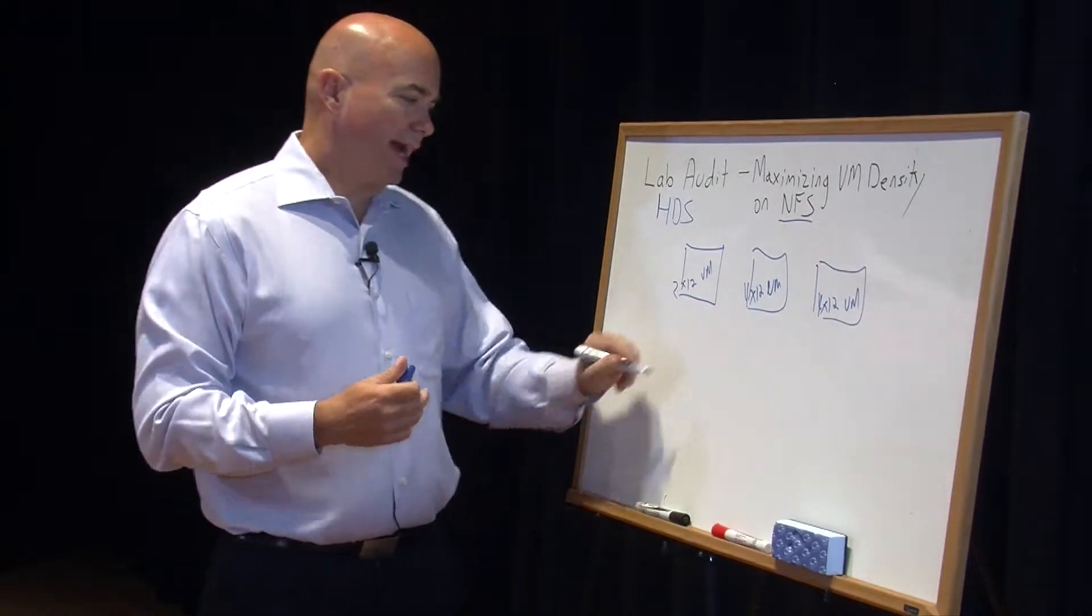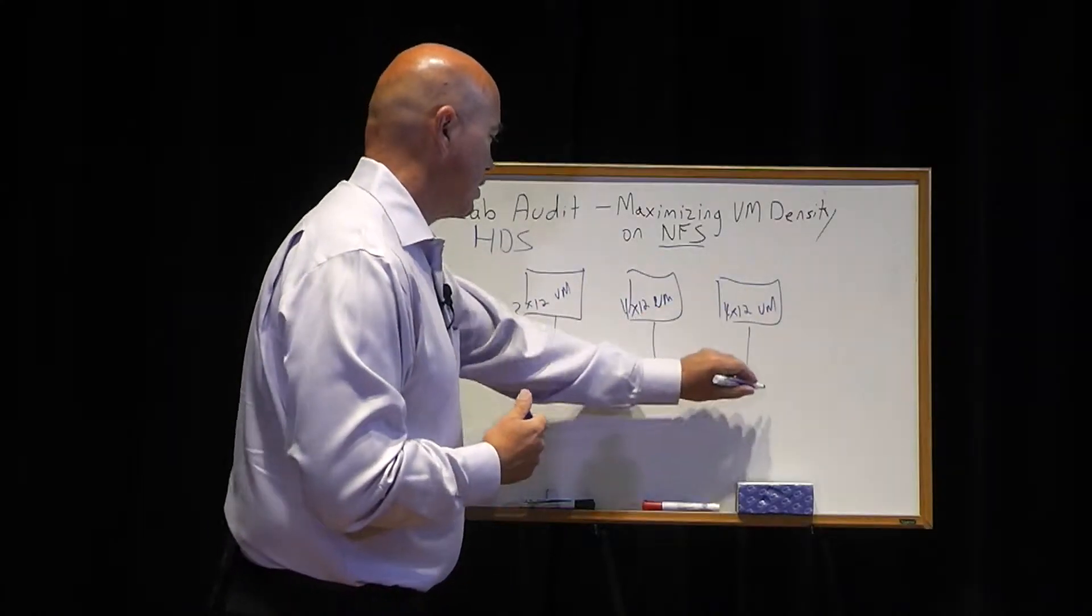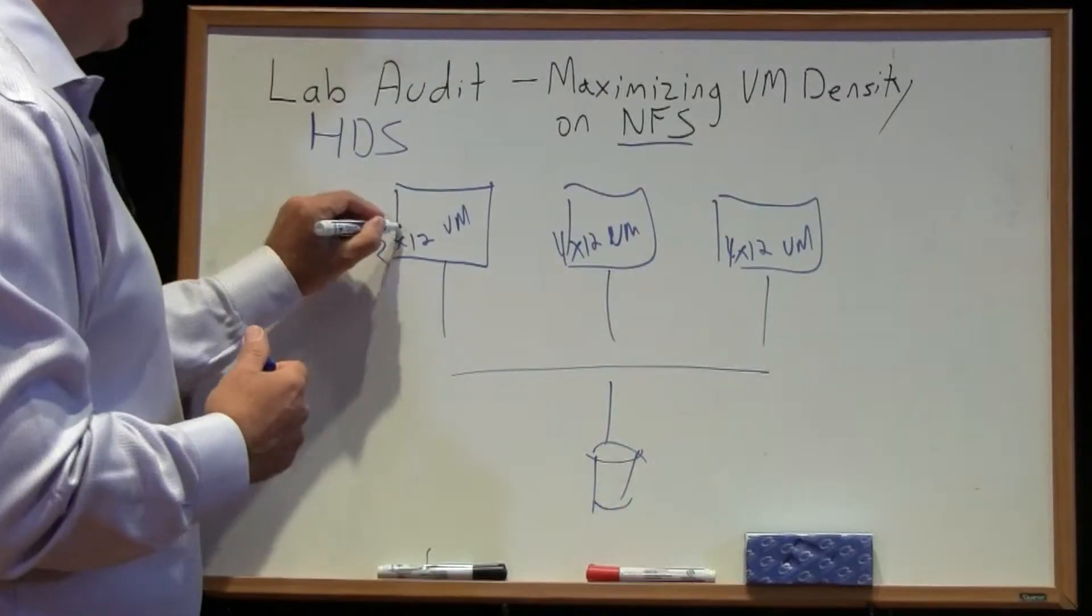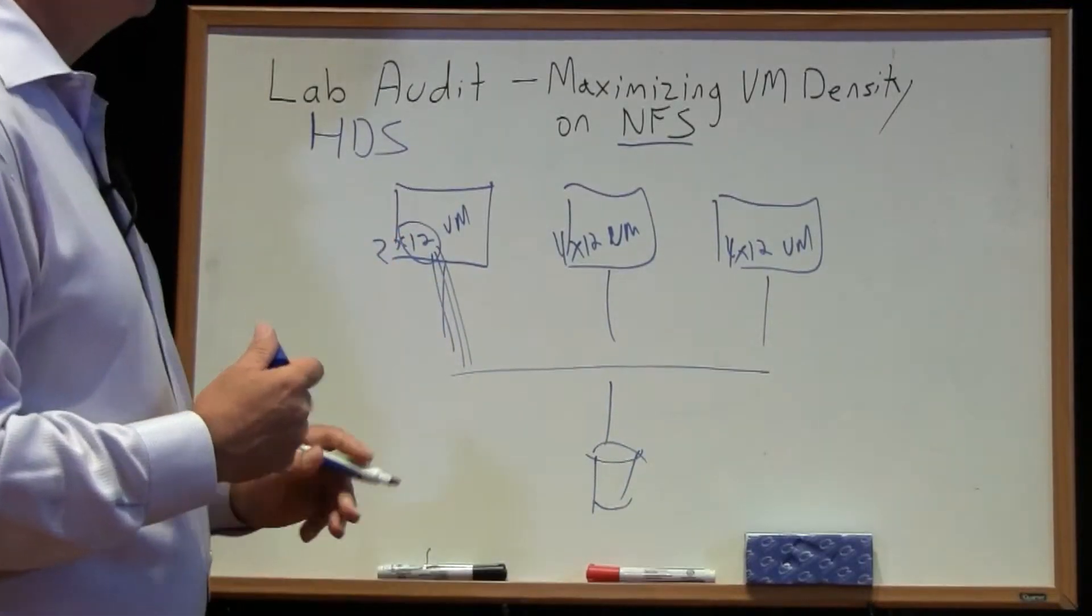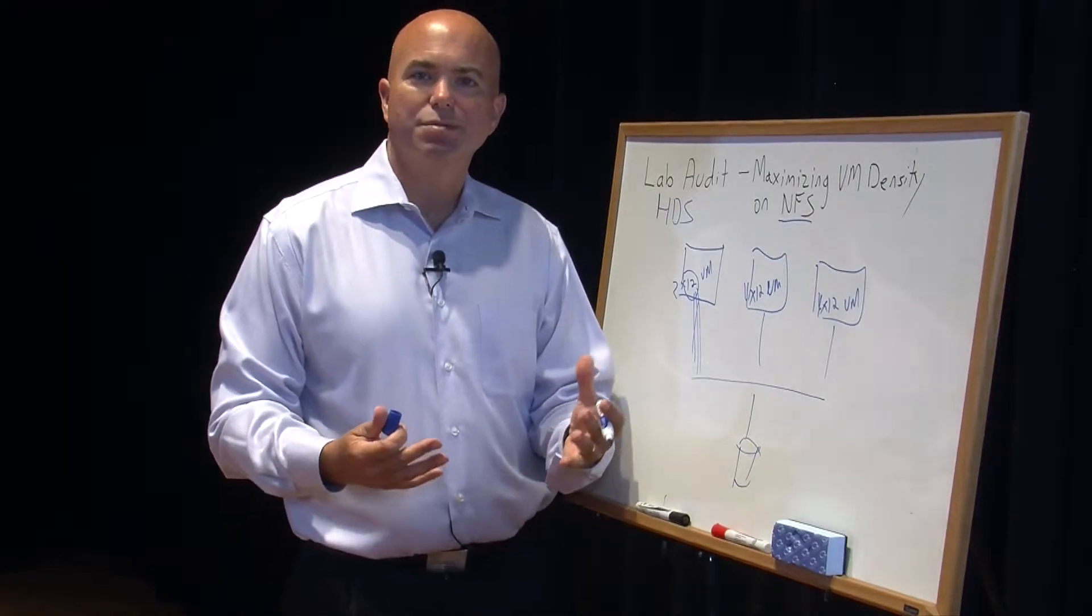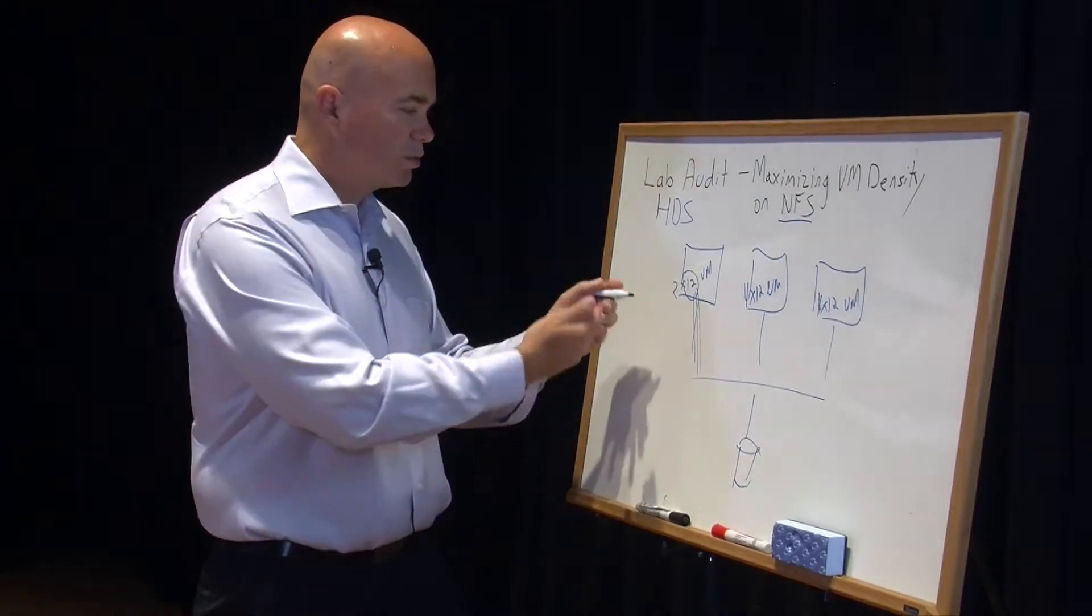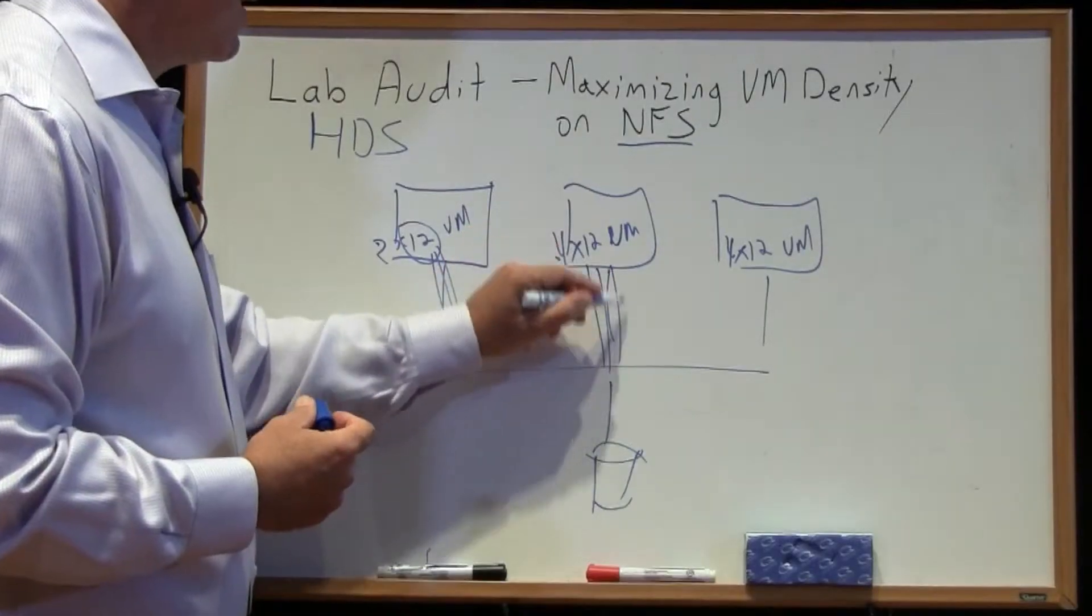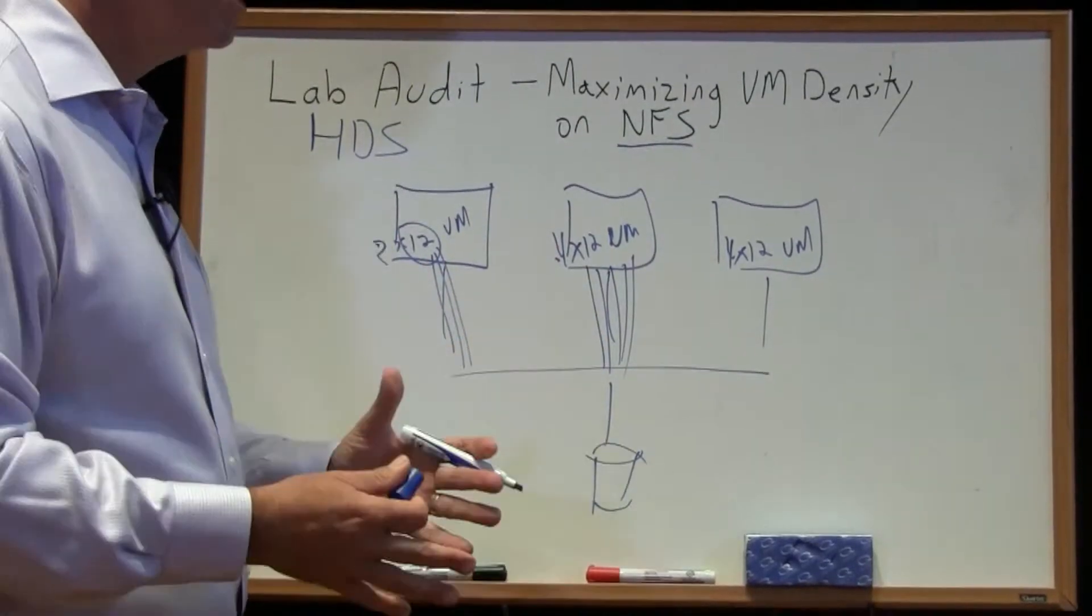But when we do that, we have a problem as we start to communicate to storage. When we just had a dozen VMs, those are generating enough traffic that have created a lot of problems in the environment already. Once we take that out to two or four times that amount, the amount of traffic we generate is really substantial.